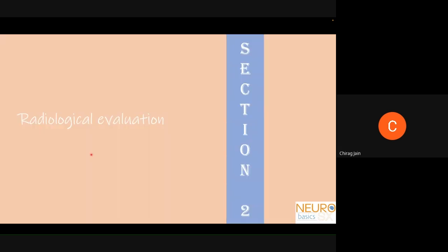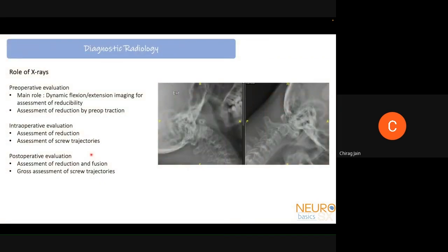That covers the clinical features of CV junction pathology. Coming now to radiological evaluation, focusing predominantly on atlanto-axial instability. X-rays can be used at multiple stages. In preoperative evaluation, dynamic flexion-extension imaging evaluates whether instability is present and whether it is reducible. An increase in the atlanto-dental interval on flexion indicates instability; if it reduces on extension, it is a reducible atlanto-axial instability.